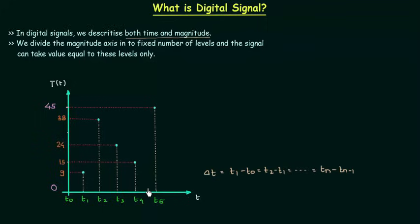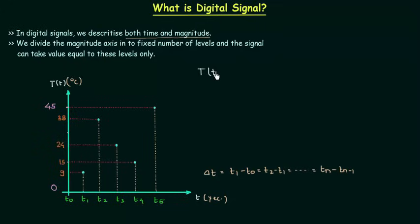Here is a simple example in which we are trying to measure the temperature of a city. Capital T is the temperature in degrees Celsius. Small t is the time in seconds and we are measuring the temperature at t1, t2, t3, t4 and t5. If we consider the case of discrete time signals, the temperature at time t1 is equal to 9 degrees Celsius, as we can clearly see.